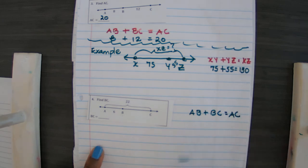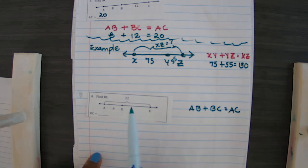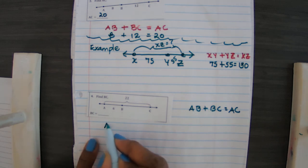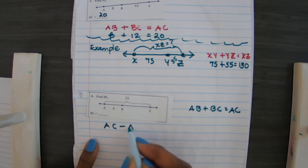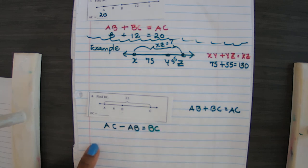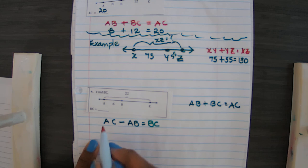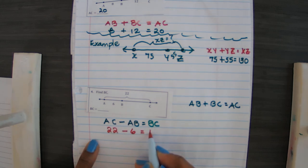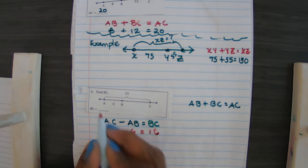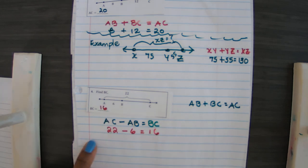But notice we know the total on this one and a part, but we don't know the part. So rather than adding we're going to subtract. So what we have here is the length of segment AC minus the length of segment AB should give us BC. So in other words, just breaking it down, making it really simple: 22 minus 6 equals 16 units. So the answer here would be 16 units.